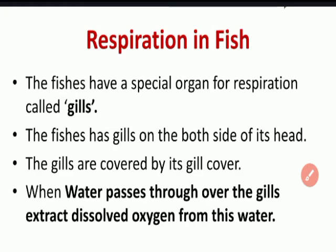Respiration in fish: fish have a special organ for respiration — gills. The fish has gills on both sides of its head, covered by a gill cover. When water passes over the gills, they extract dissolved oxygen from the water.